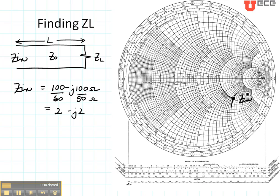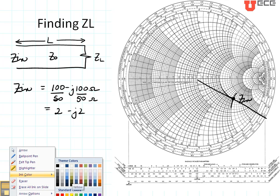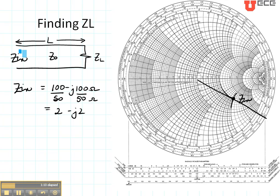Now since we're going to be going a distance L, I'm going to draw a straight line from the center through my point out to the outer axis. But this time instead of going towards the generator, I'm going to be going towards the load. We need to use a different axis — here we've marked wavelengths towards the load, and it goes in this direction. So this axis is the one I'm going to be measuring for this example.